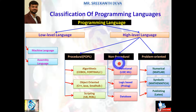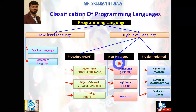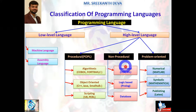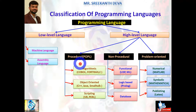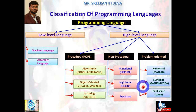Non-procedural languages allow the programmer to focus on what to do rather than how to do it. These languages do not focus on individual processes needed to reach a conclusion but rather on ways to get to the conclusion itself. This is why non-procedural languages are often referred to as declarative languages. Examples include functional languages, logic-based languages, and data-based related languages.